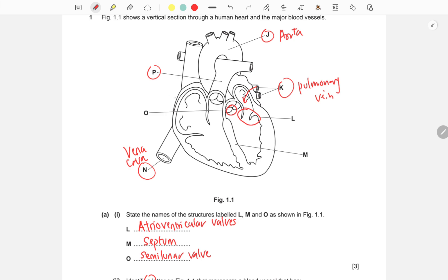The atria, both left and right atriums, contract at the same time to push blood into the ventricles. But we're just looking at the left side specifically.